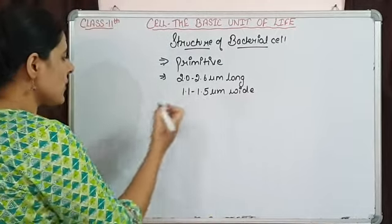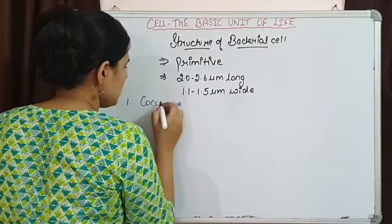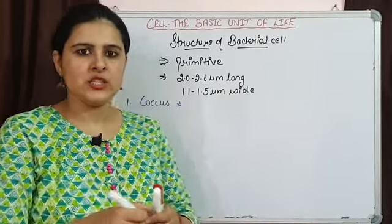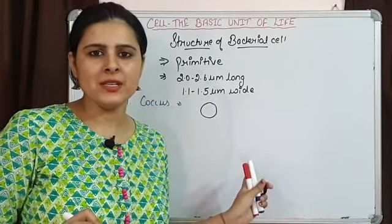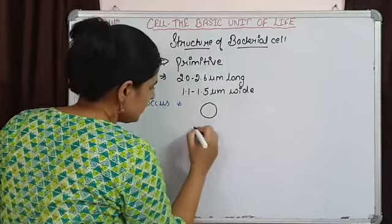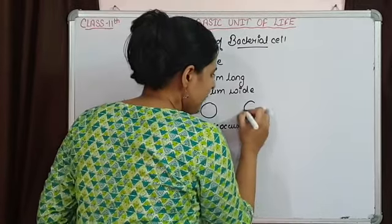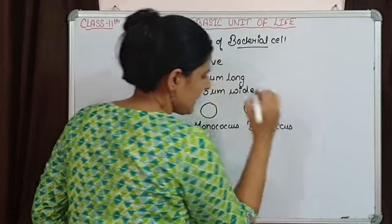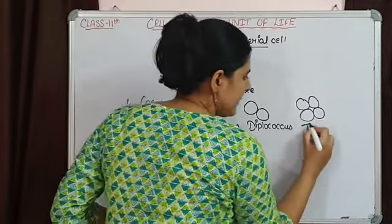Some bacteria are spherical or round in shape and they are known as cocci. Cocci are those bacteria which are generally round or spherical. If a single round bacterial cell is present, that is known as monococcus. If two are present, this is diplococcus. If four are present together, both spherical or oval in shape, that is tetracoccus.